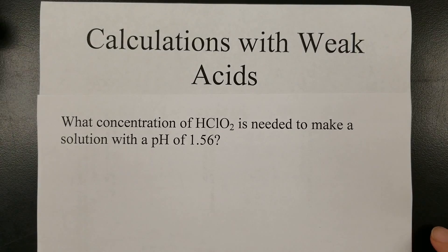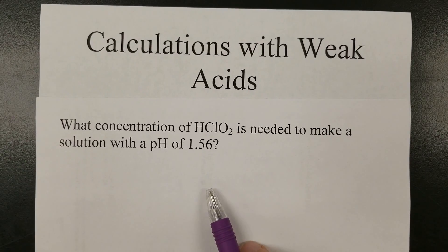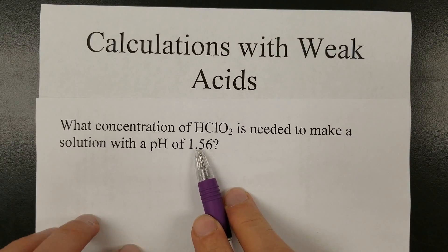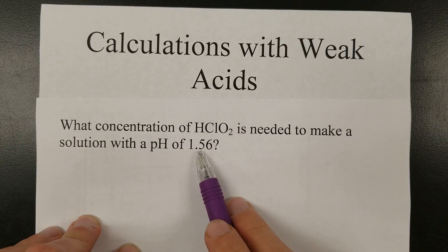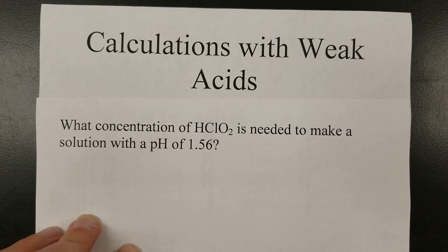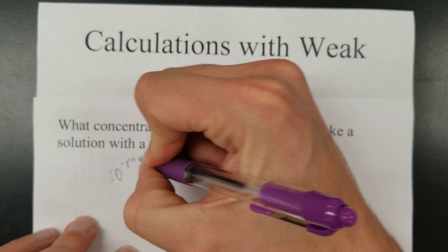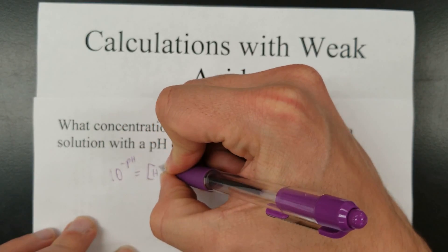All right, let's talk about how you deal with a situation where you're trying to find what concentration of acid would make a particular pH. Now, if this was a strong acid, this would be a very straightforward calculation. You would just 10 to the power of the negative pH gives you the hydrogen ion concentration.